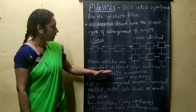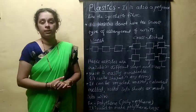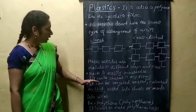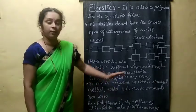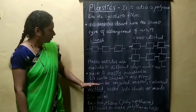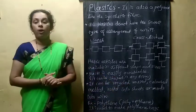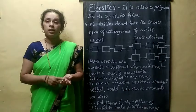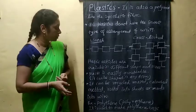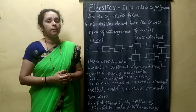Plastic articles are available in different shapes and sizes because plastic is easily moldable — meaning it can be changed into any shape or form. It can be recycled, reused, colored, melted, rolled into sheets, and made into wires. Because of these properties, plastic is used in many fields.